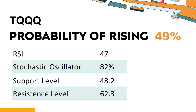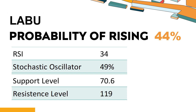TQQQ's short-term resistance level is 59.3. If it breaks through 59.3 during the session, it will look up to 62.3.